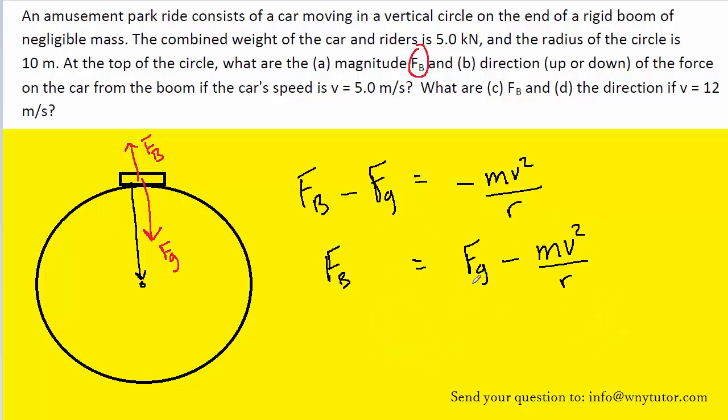At this stage we're ready to go ahead and plug in the values for parts A and B of the problem. The force of gravity was given to us as 5000 newtons, so that will be our Fg.